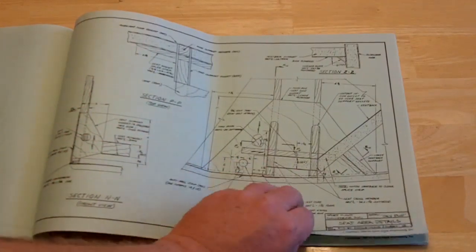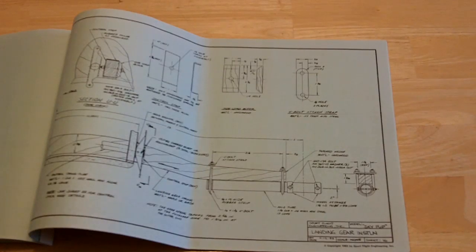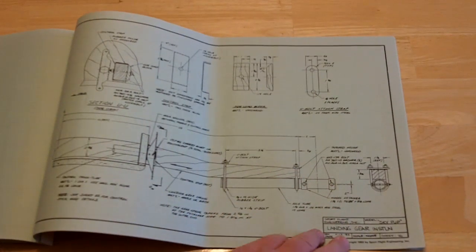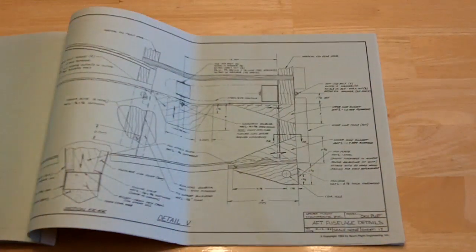There's the seat area. Really, really a nice set of plans. Not too complicated, but what is here is very detailed. There's the landing gear. That's just a big chunk of wood. Really nice and simple. Easy to do.